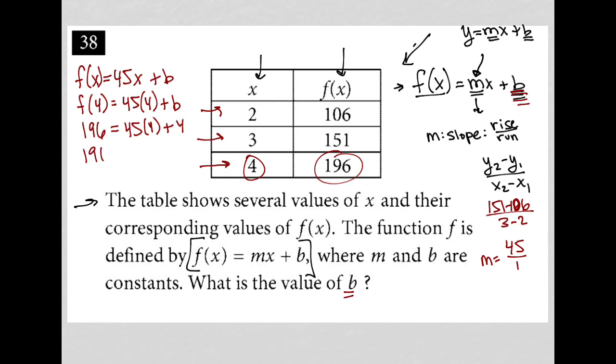45 times 4 is equal to 180, so plus b. Subtract 180 from both sides and what I'm left with is that 16 is equal to b, and that's what they want. They want the b value. So what is the value of b? The answer is 16.